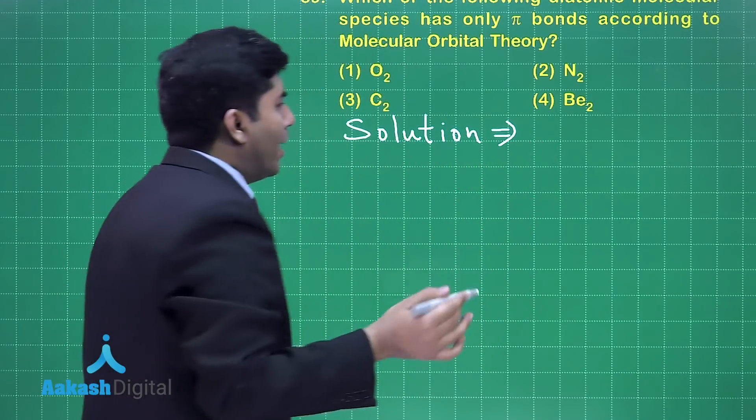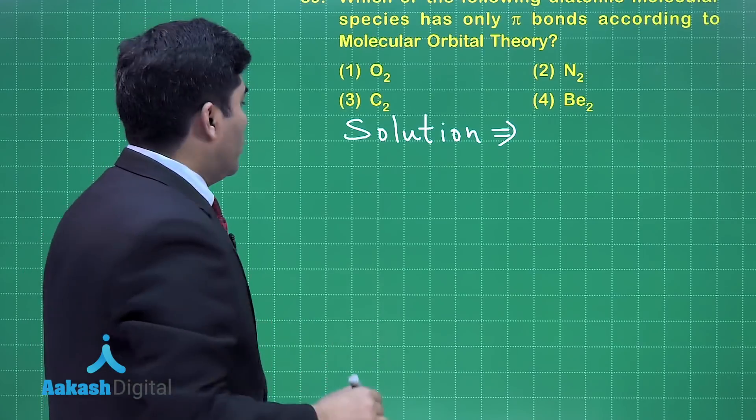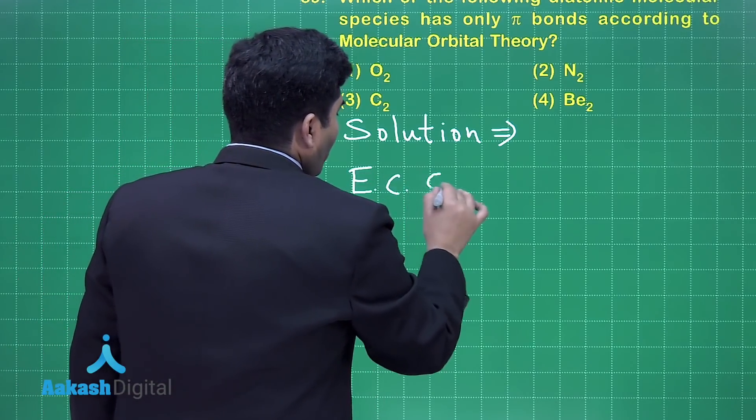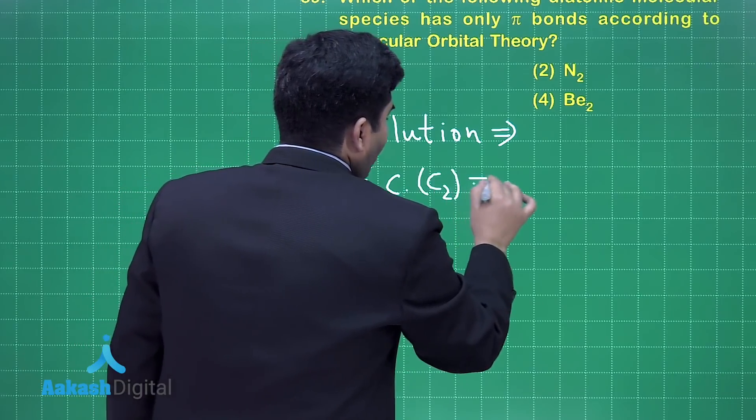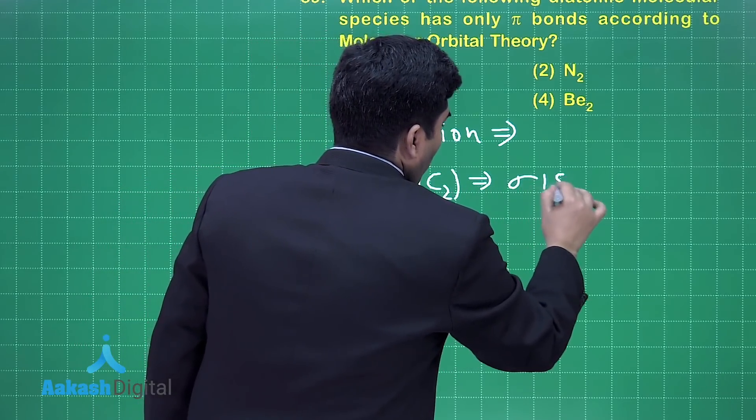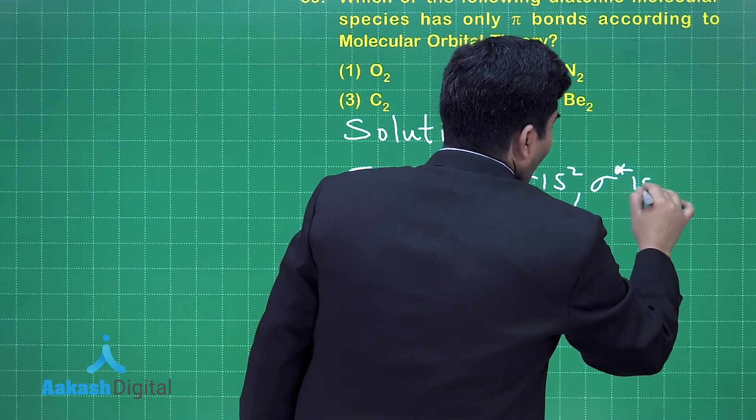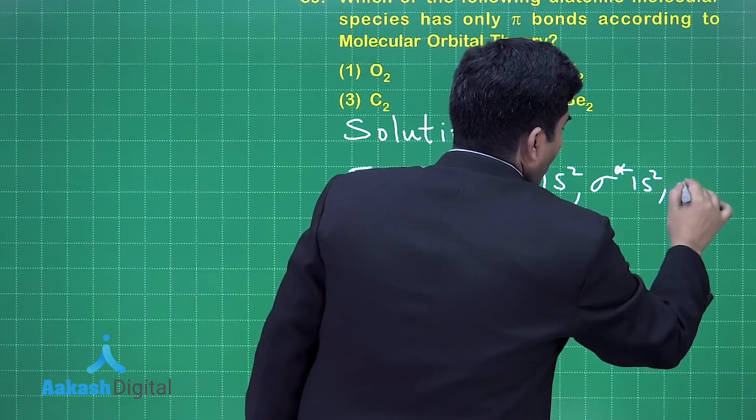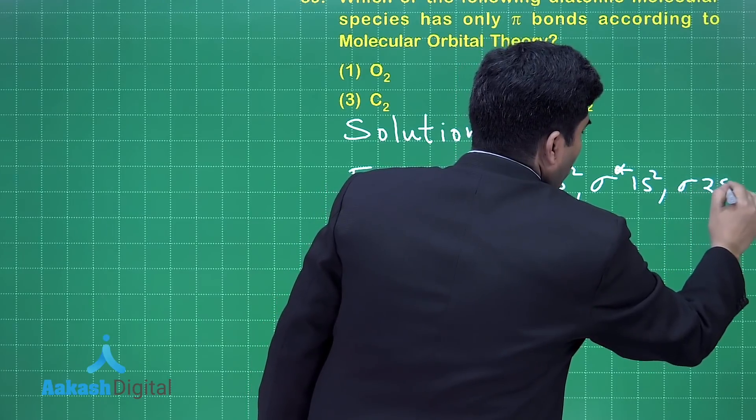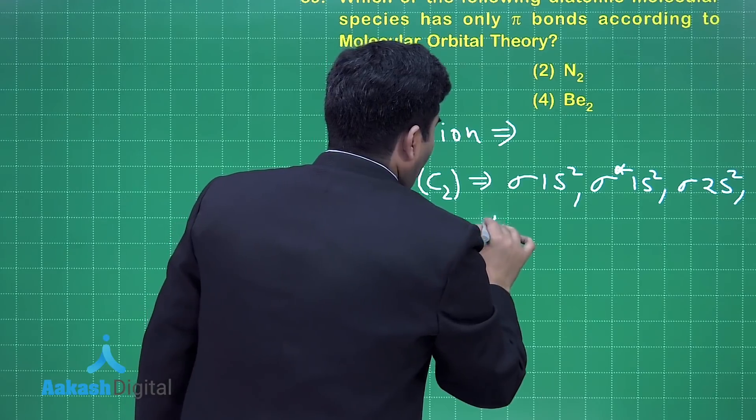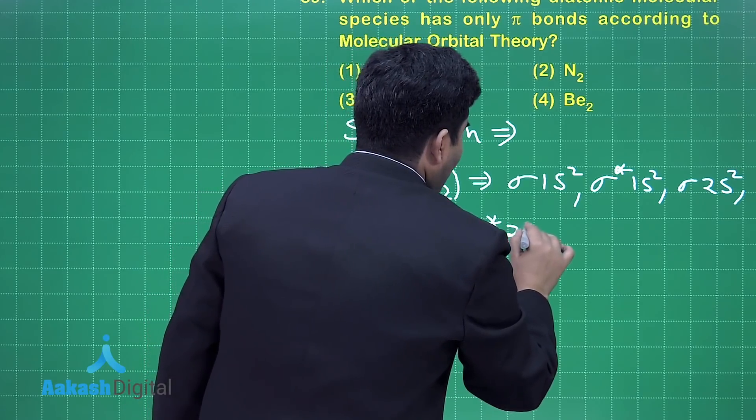First, we write the electronic configuration of C2: σ1s², σ*1s², σ2s², σ*2s².